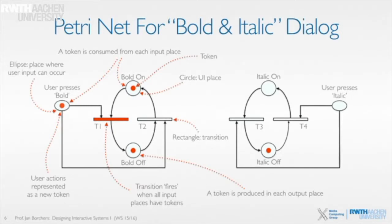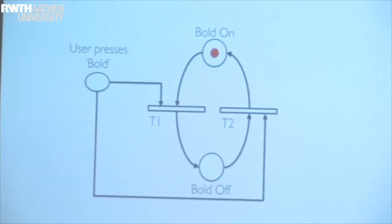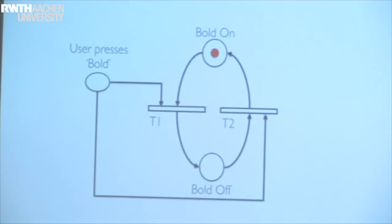With that you will end up with something like this. This network has two normal places — and in this case it's kind of similar to a state transition network because we only have one token circulating. When the token is in the top place it represents bold being on; when the token is in the lower place and none in the top, that represents bold being off.